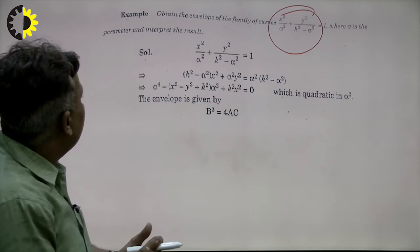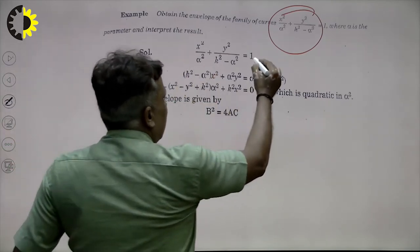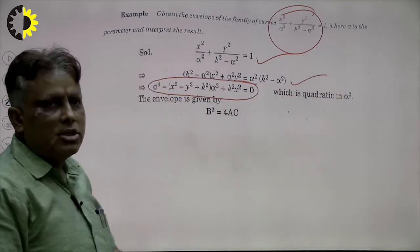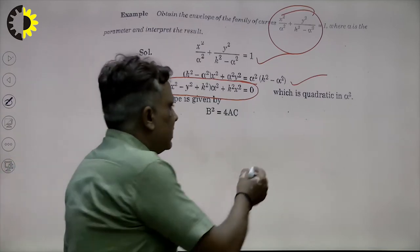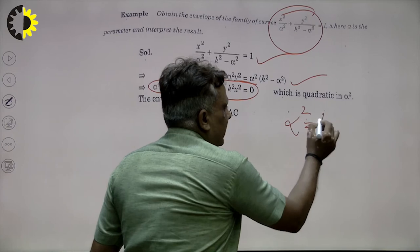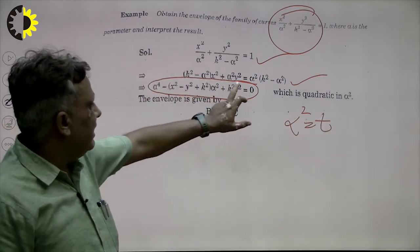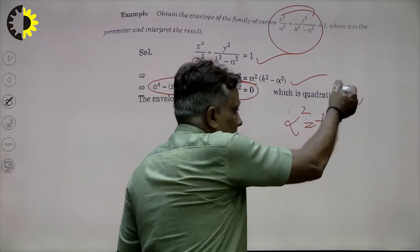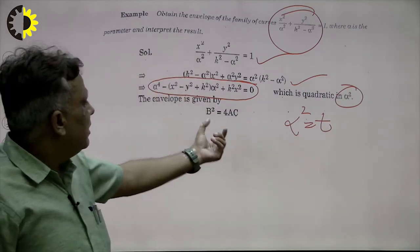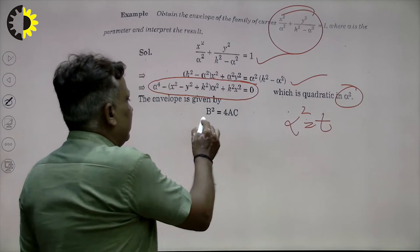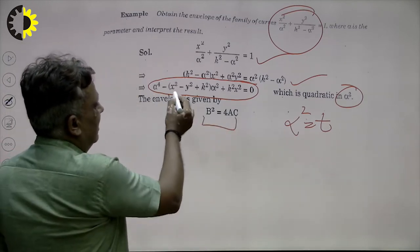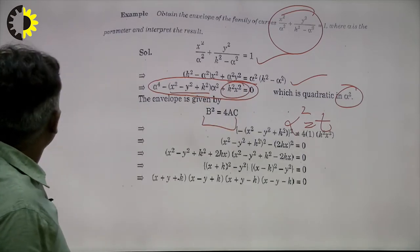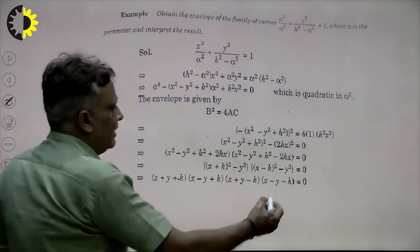Consider another problem, where α is the parameter. First we write it in quadratic form by taking LCM. This is not a quadratic form, so we convert it into quadratic form by substituting α² = T. So T² term, T term, and a constant — this is a quadratic equation in α². Therefore b² − 4ac = 0 gives the envelope. Here a = 1, b and c are identified accordingly, and putting their values gives the conclusion.